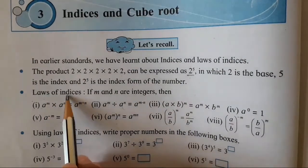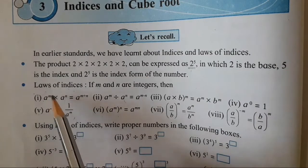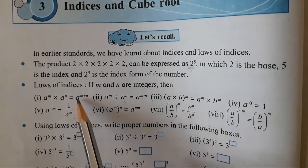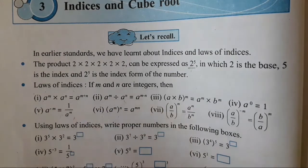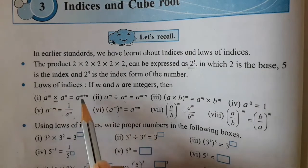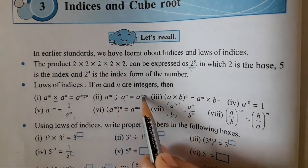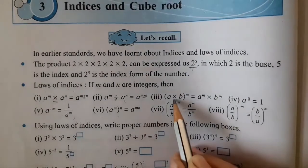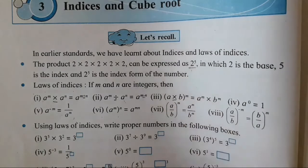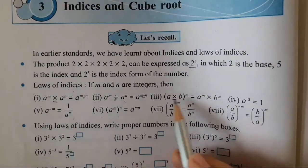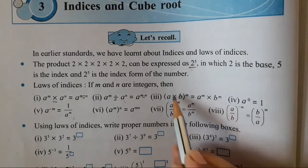The laws of indices: A raised to M multiplied by A raised to N is equal to A raised to M plus N. You all have to remember — when there is multiplication, you add. When there is division, you subtract. When there is multiplication inside a bracket, you all have to separately multiply M.